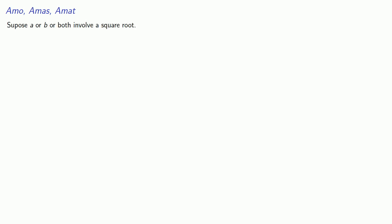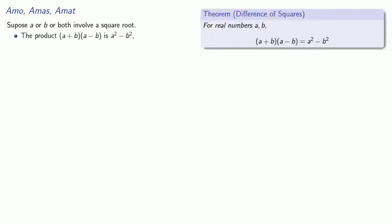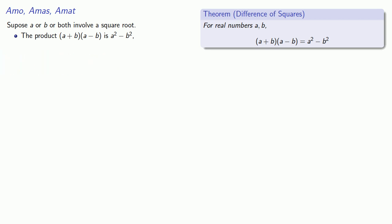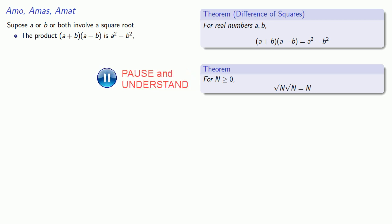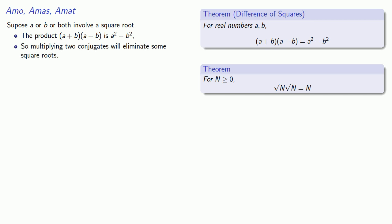So who cares about the conjugate? The reason that conjugation is so important in mathematics is that suppose either a or b, or both, involve a square root. Because the product a plus b times a minus b is a squared minus b squared, and when I multiply a square root by itself I get the radicand, multiplying two conjugates will eliminate some of the square roots.